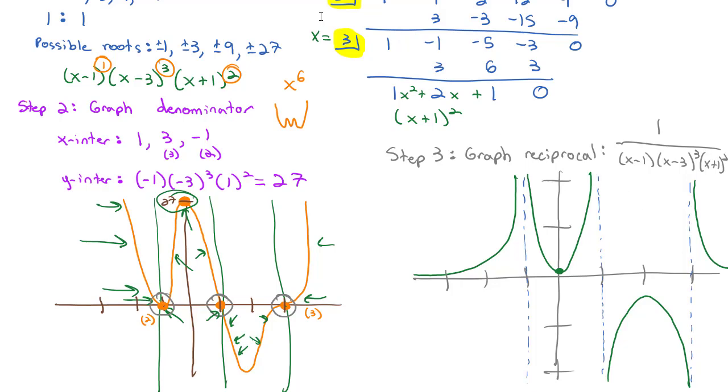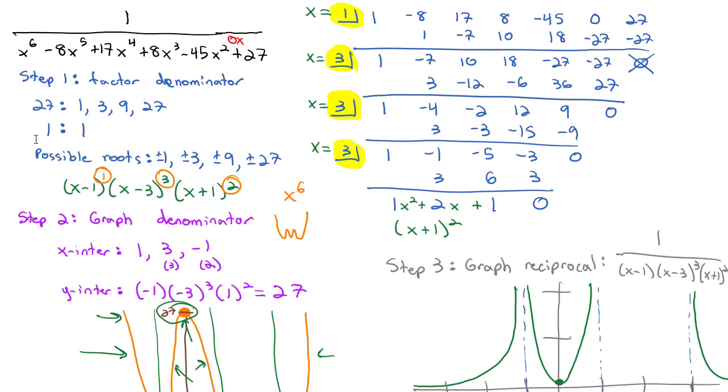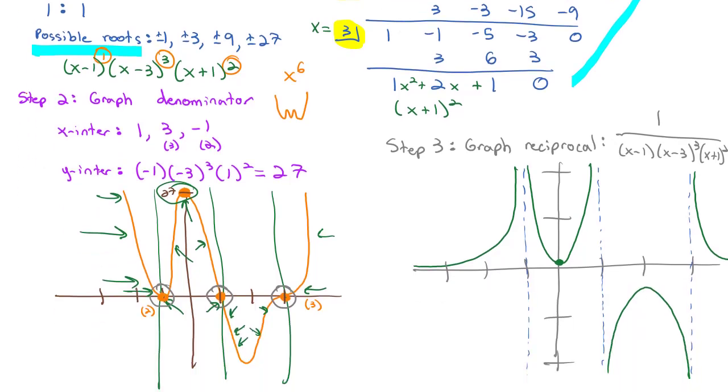This process took into account a lot of things that we saw this chapter. First thing that we saw this chapter was how do we factor denominators. Well, that was using the rational root theorem that we saw in section 3. To use the rational root theorem, we had to do a lot of synthetic division that we saw in section 2. Once we had that, we could graph the denominator, which is what we saw in section 1. And then, finally, using that information, we could graph the reciprocal, and that gave us our final graph. So it's a really good review problem to take a look at doing the entire process. There's a few things that weren't in this problem, but it does synthesize quite a bit of good problems.